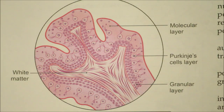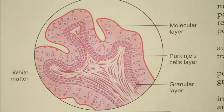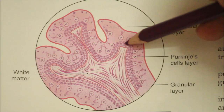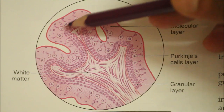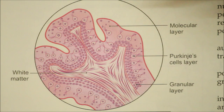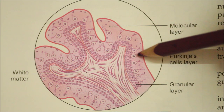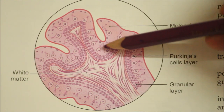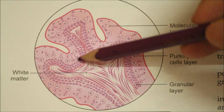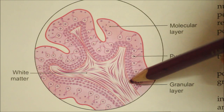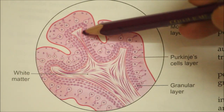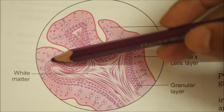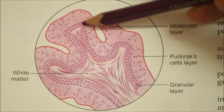The molecular layer consists of unmyelinated nerve fibers derived from the parallel fibers of axons of granule cells. The intermediate layer consists of a single layer of cell bodies of Purkinje cells. The inner granular layer consists of cell bodies and dendrites of granule cells and Golgi cells. There are five types of neurons in the cerebellum, of which four — Purkinje, basket, stellate, and Golgi — are inhibitory, while only the granular cells are excitatory.